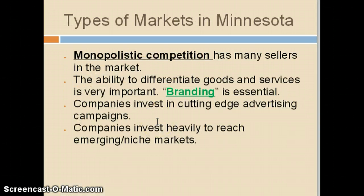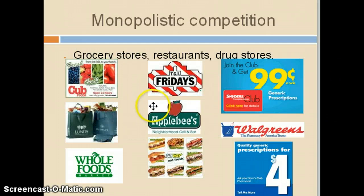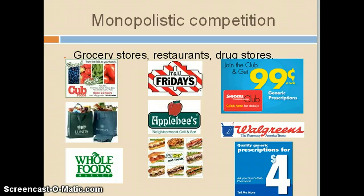Monopolistic competition has many sellers in the market, and they work very hard to differentiate their goods and services from competitors. They too will use advertising as a tool, and they will invest heavily in emerging markets. Examples of monopolistic competition include grocery stores, restaurants, and drug stores. Monopolistic competition usually has a lot of competition among these stores, leading to lower prices for the consumer.